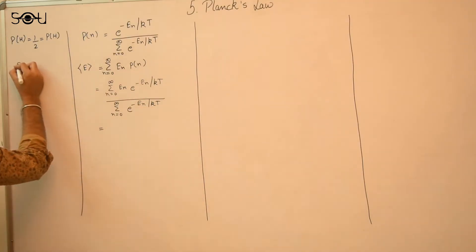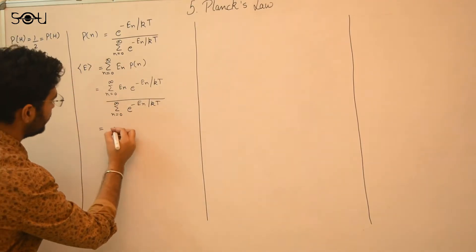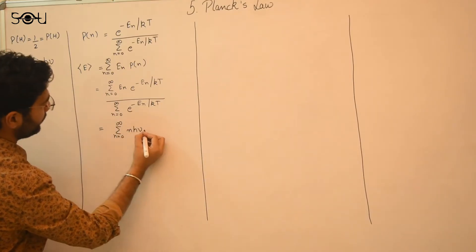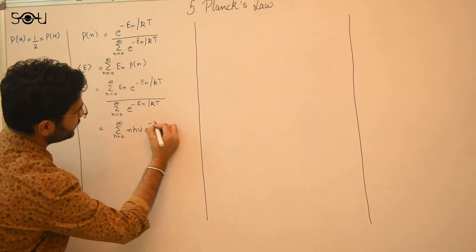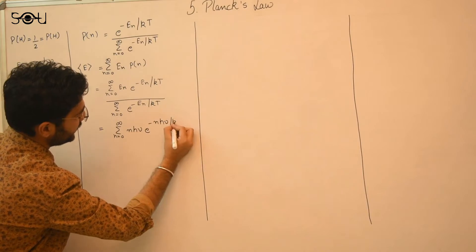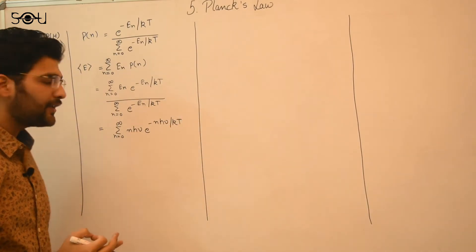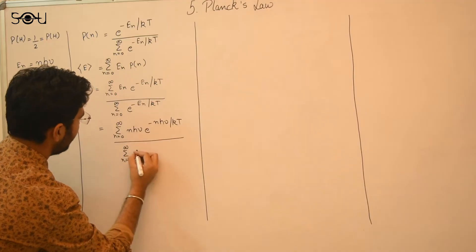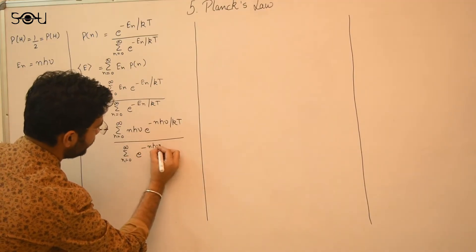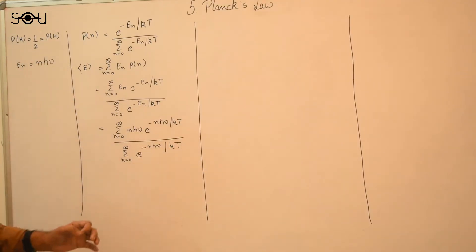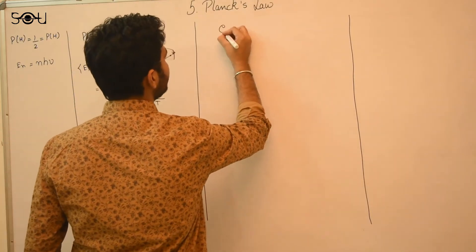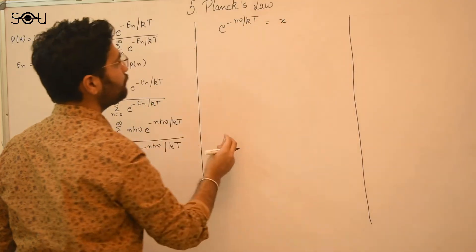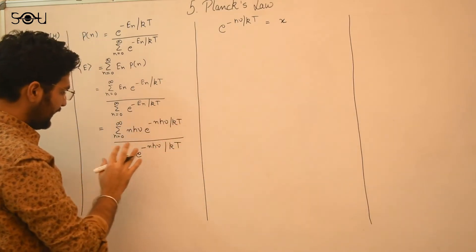Substituting Eₙ = NHν, the average energy becomes the summation from n = 0 to infinity of NHν · e^(−NHν/KT), divided by the summation of e^(−NHν/KT). To simplify the calculation, we let X = e^(−Hν/KT). Substituting this, e^(−NHν/KT) becomes X raised to the power N.